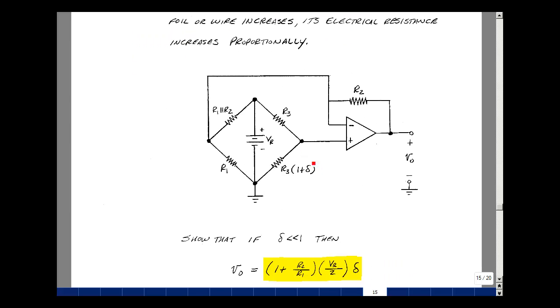Suppose this is our strain gauge or our change in resistance. We're going to model this as R3 times 1 plus delta, where delta is a very small number compared to 1.